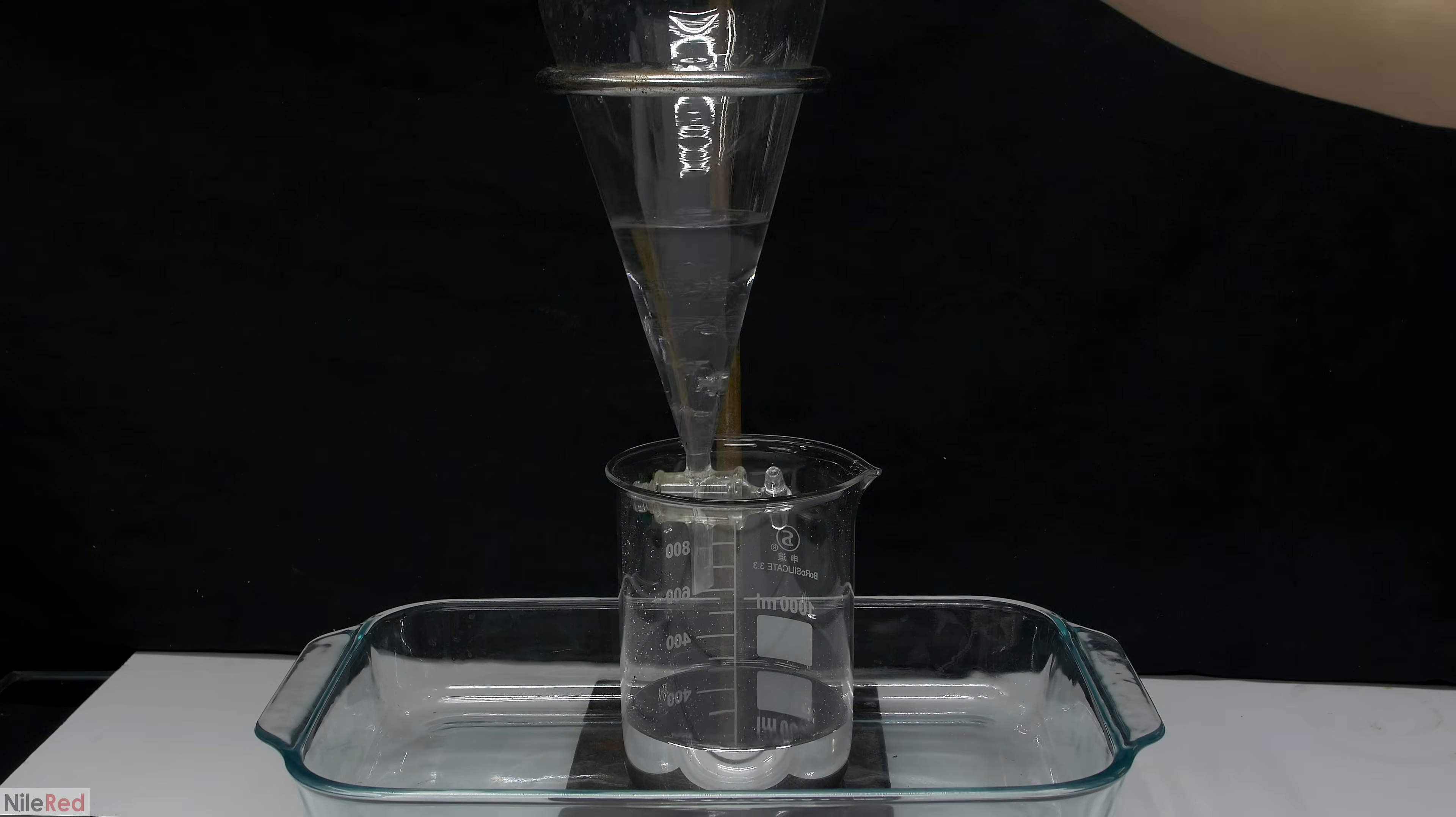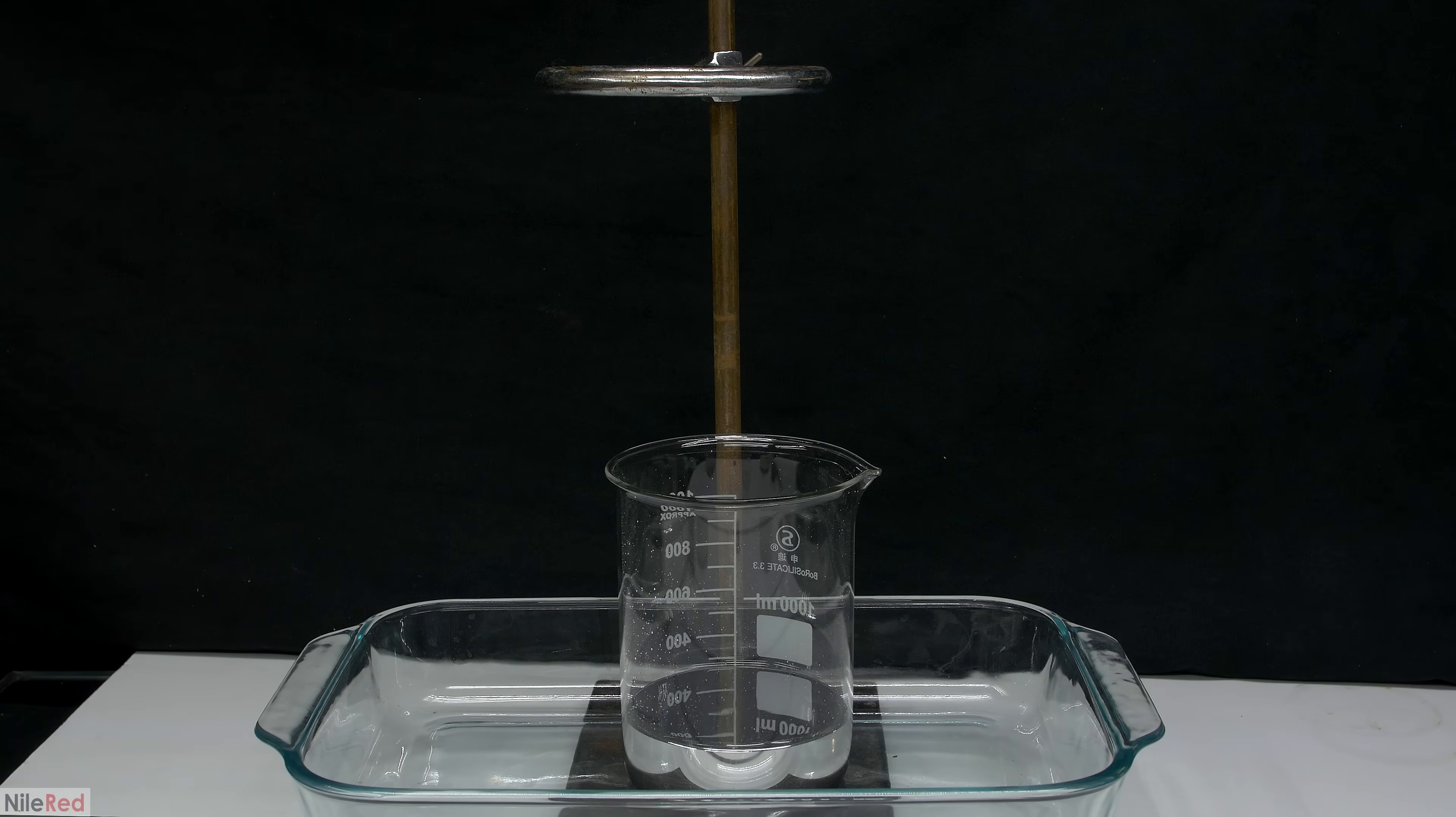Once I'm done draining away the mercury, the separatory funnel is taken away and the water is transferred to a mercury waste container. The water contains trace amounts of mercury, so it's really important to not pour it down the drain.